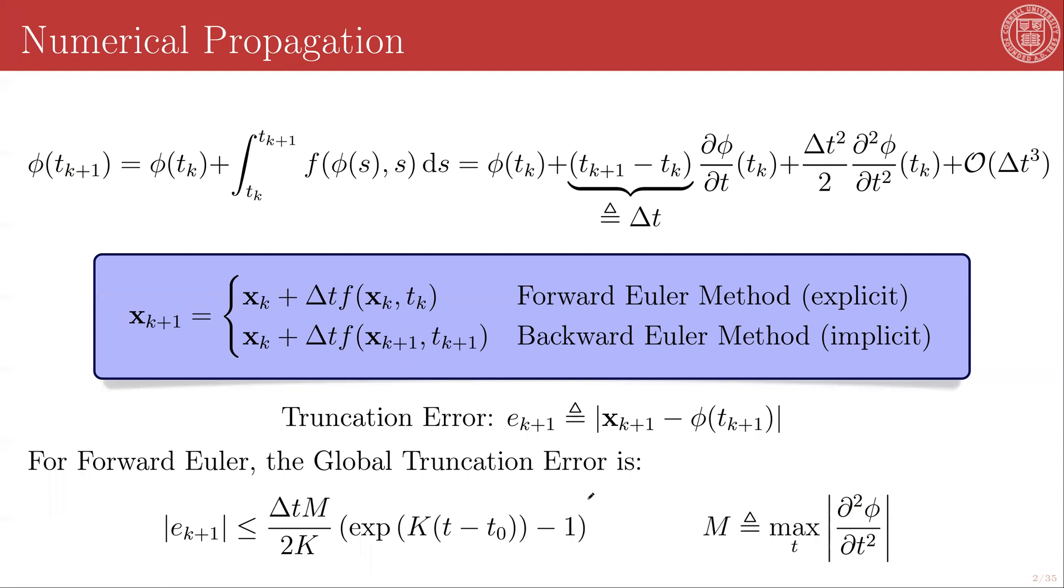We now have provided ourselves with two different error metrics. One of them, the local truncation error, is telling us how much error we're accumulating from step to step due to the local linearization of our propagation. The second one is telling us how much error we're accumulating globally as a result of carrying through all of these propagations one after another.